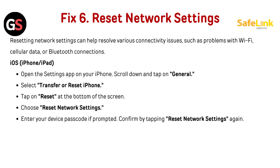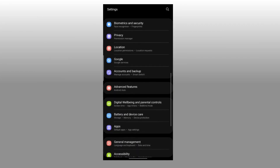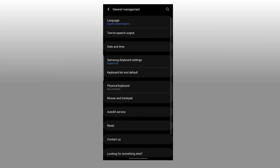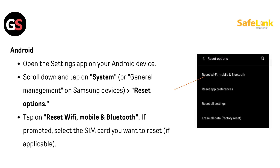Fix 7: Reset network settings. Resetting network settings can help resolve various connectivity issues such as problems with Wi-Fi, cellular data, or Bluetooth connections. For iOS (iPhone or iPad), open the Settings app, scroll down and tap on General, select Transfer or Reset iPhone, tap Reset at the bottom, choose Reset Network Settings, enter your passcode if prompted, and confirm by tapping Reset Network Settings again. For Android, open Settings, scroll down and tap on System or General Management (on Samsung devices), tap Reset, then tap Reset Wi-Fi, Mobile and Bluetooth. If prompted, select the SIM card you want to reset.